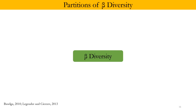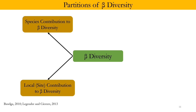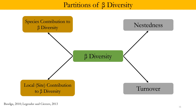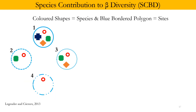Beta diversity can be partitioned into two pairs of constituent components. The first pair is species contribution to beta diversity and site contribution to beta diversity, or local contribution to beta diversity. The other pair is the components of nestedness and turnover. Let's go through both these pairs individually.